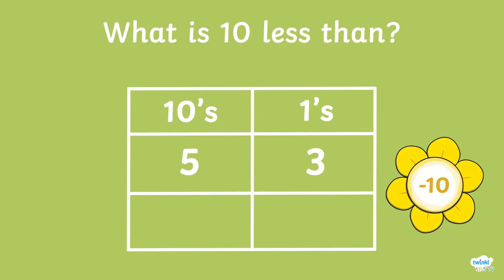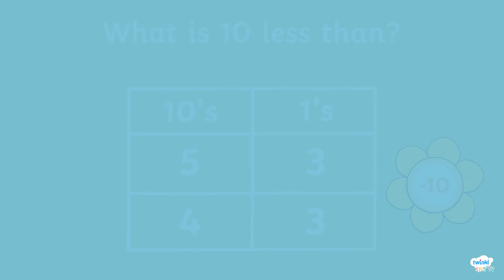The only part that is different is that we are subtracting instead of adding. Remember, when subtracting or adding 10, the ones will remain the same. But the tens column will minus 1 as we are taking away 10. This means that the answer is 43.